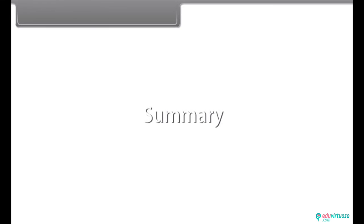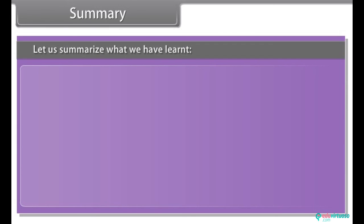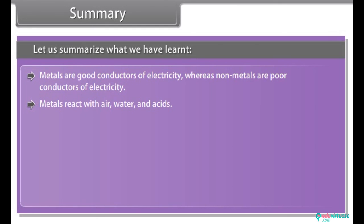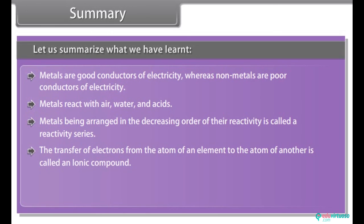Summary. Let us summarize what we have learned. Metals are good conductors of electricity, whereas non-metals are poor conductors of electricity. Metals react with air, water and acids. Metals being arranged in the decreasing order of their reactivity is called a reactivity series. The transfer of electron from the atom of an element to the atom of another is called an ionic compound. Metals are extracted from ores. The most widely used method for refining impure metals is called electrolytic refining.